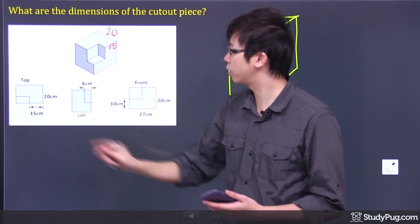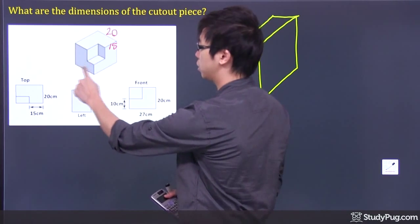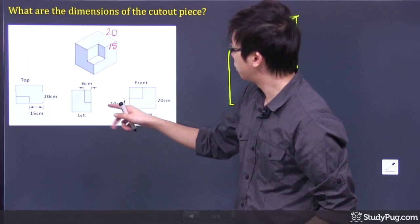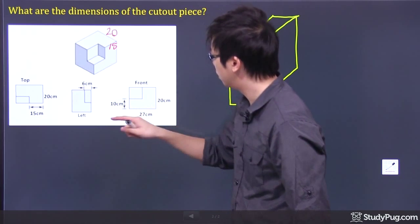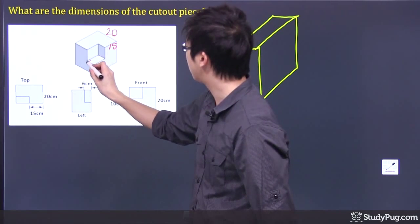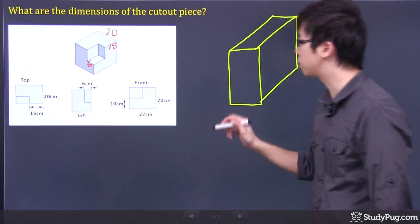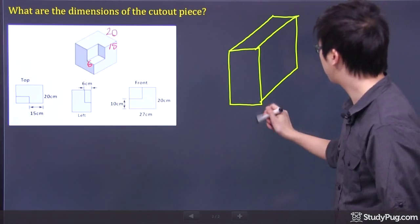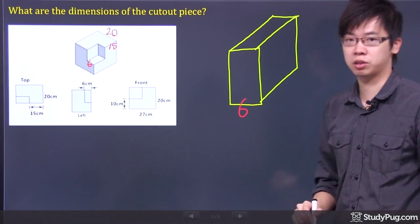Let's go to the next one. Let's look at it from the left. So this is your left-hand side, this piece right here. If you're looking from the left, this part right here is 6 centimeters, so that's 6. So we just discovered our first dimension of the cutout piece. This bottom part right here is 6.